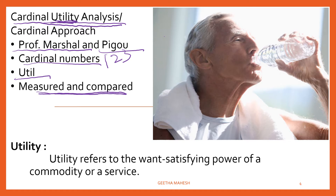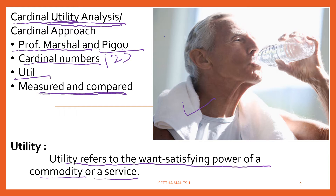Now let us discuss what is utility. Utility refers to the want-satisfying power of a commodity or service. That means a commodity has a power or capacity to satisfy human wants. Take the example of a person who is very thirsty. When he has a glass of water, that water has the power to quench his thirst. That power itself we call utility.